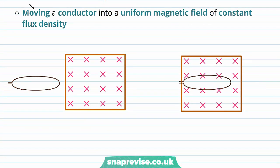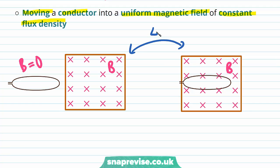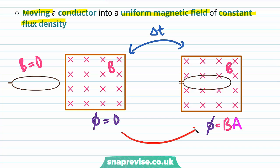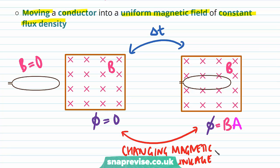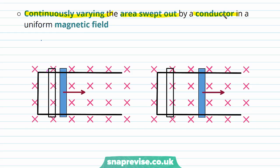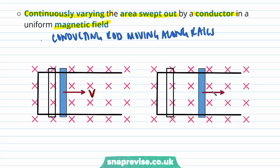Another way to induce an EMF is to move a conductor into a uniform magnetic field of constant flux density. Here is a uniform flux density of magnitude B. Initially the conductor is outside the magnetic field, and over time it's moved inwards and outwards, causing the magnetic flux to change from phi equals zero to phi equals B times A, so there's a change in magnetic flux linkage. We can also continuously vary the area swept out by a conductor in a uniform magnetic field. Here we have a conducting rod moving along the rails with a certain velocity V, and if we change the area swept out by this conductor from A1 to A2, we induce a change in the magnetic flux linkage.